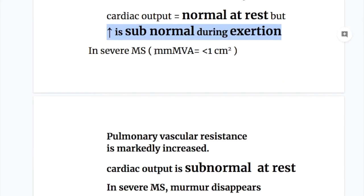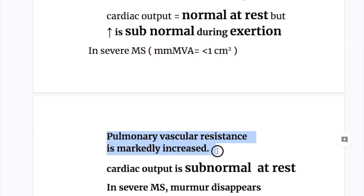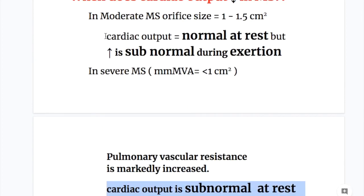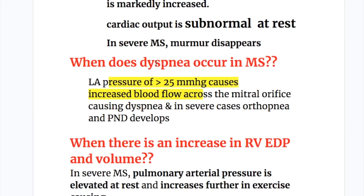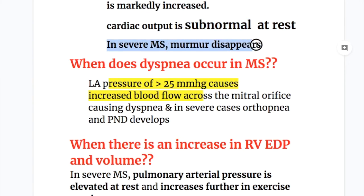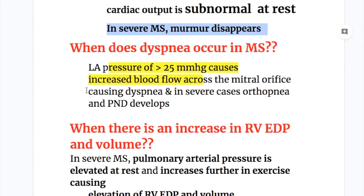In severe mitral stenosis, when the size is less than 1 cm², pulmonary vascular resistance is markedly increased and cardiac output is subnormal at rest. So in moderate MS, cardiac output is normal at rest, but in severe MS it is subnormal at rest. The murmur disappears because of stenosis, stiffness and calcification of the valve.